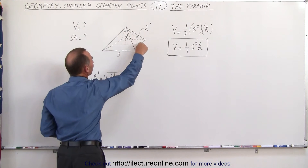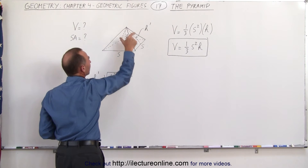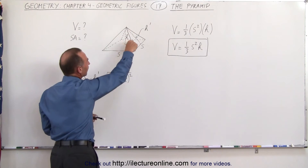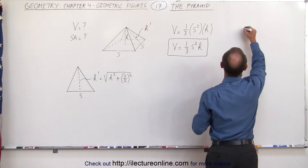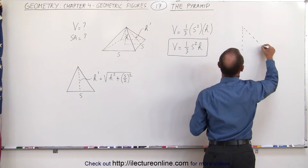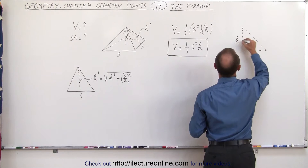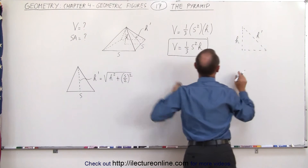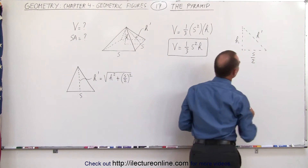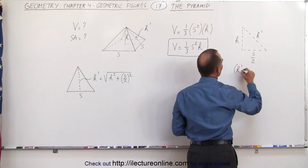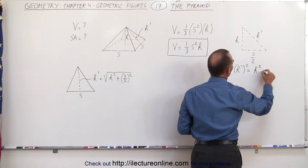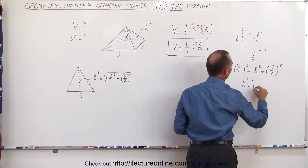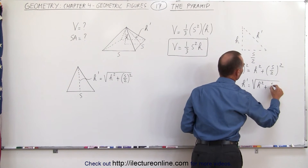If you draw a right triangle, you can see that one leg is the height of the pyramid, the hypotenuse is the slanted height h prime, and the base leg is half the side length — s over 2. Taking that over and drawing it on the side: h is the vertical height, h prime is the slanted height we're looking for, and s over 2 is the base. So h prime squared equals h squared plus (s/2) squared, or h prime equals the square root of h squared plus (s/2) squared.